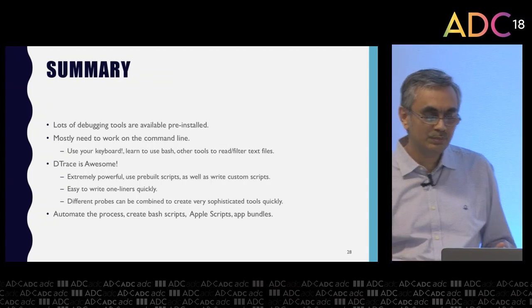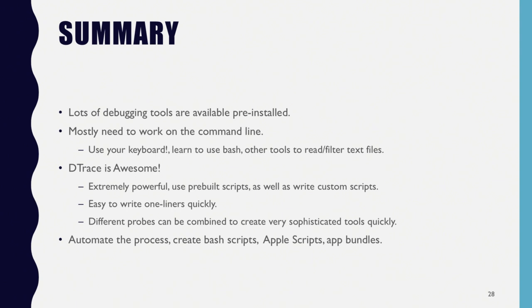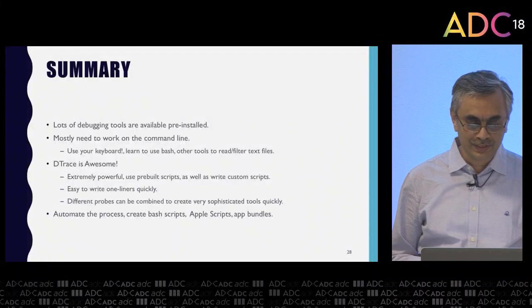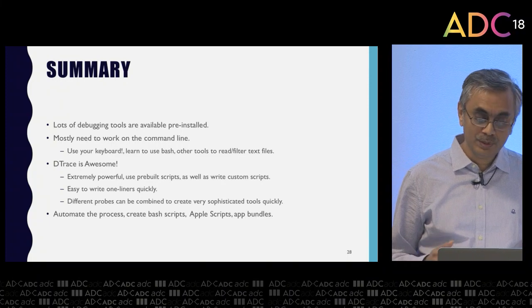To summarize: there are lots of debugging tools pre-installed on all macOS systems which you can use. With most of them you need to work on the command line, so learn to use bash and the many tools available to help you read and filter text files. dtrace is awesome — extremely powerful. You can use prebuilt scripts or write your own custom scripts. It's very easy to write one-liner scripts to add simple logging, create custom profilers, measure CPU usage, gather statistics, and combine different probes to create sophisticated tools. Try to automate the process by creating scripts wrapped in app bundles.